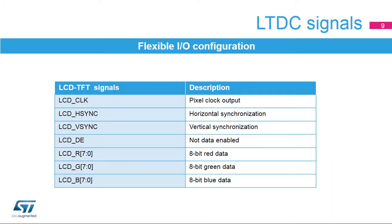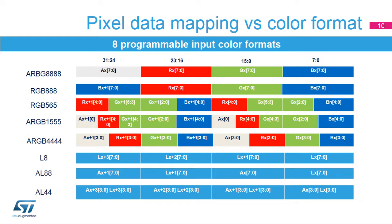The LTDC output signals are summarized in this table. The LCD-TFT controller pins must be configured by the user application; unused pins can be used for other purposes. The programmable pixel format is used for the data stored in the frame buffer of a layer. The LTDC can be configured with up to 8 programmable input color formats per layer.